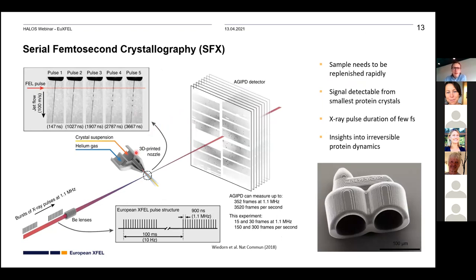The sample must replenish very rapidly because European XFEL's pulse structure consists of bursts of photon pulses separated by a long gap. Within each burst, pulses are separated by only a very short time, leaving little time to replace the sample. The FEL shoots a hole in the liquid jet, and the jet must be fast enough to fill the gap and deliver fresh sample; otherwise the second pulse would just hit the hole produced by the first.